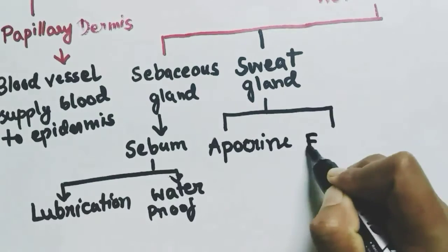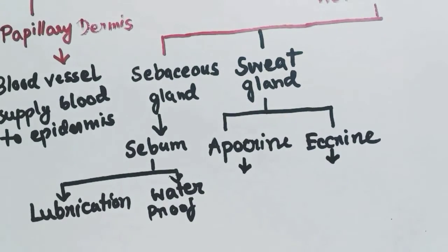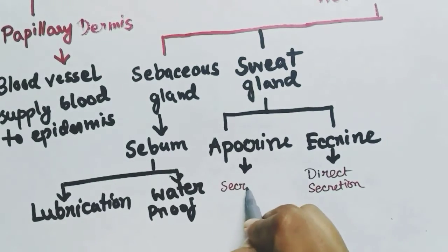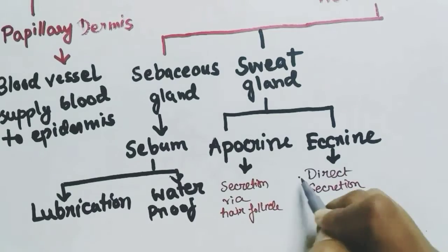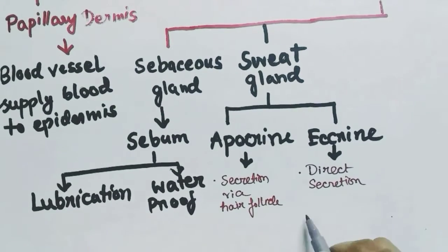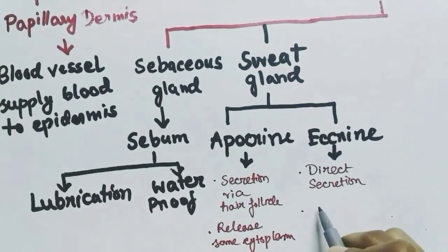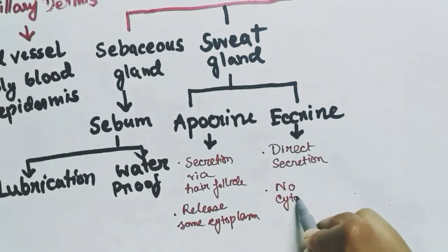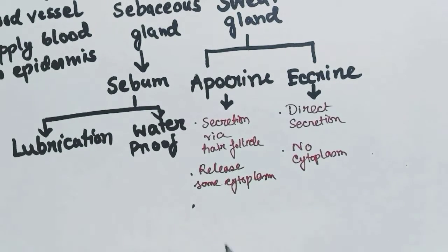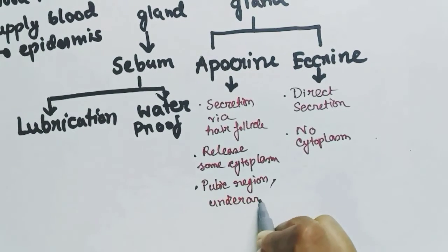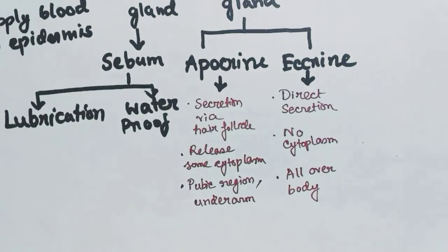The eccrine type of sweat gland gives direct secretion, but the apocrine secretes via the hair follicle. During secretion, the apocrine glands release some cytoplasm along with the secretion, whereas the eccrine glands release no cytoplasm. Apocrine glands are found in the pubic region and underarms, while eccrine glands are found all over the body.